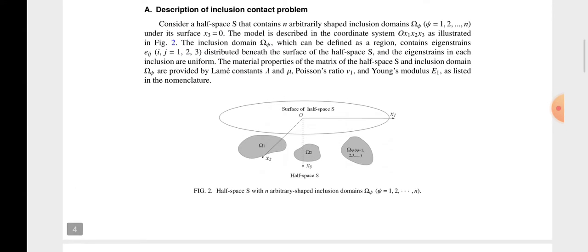Consider the half space S which contains n arbitrary shapes inclusion domains with respect to x1, x2, and x3. And under the x1, x2 something varies where x3 is 0 as its own surface, the two-dimensional only. The material properties of the matrix of the half space S and the inclusion domain are provided by Lame's constant lambda plus mu, Poisson's ratio nu, the Young modulus E1, and listed in the nomenclature.